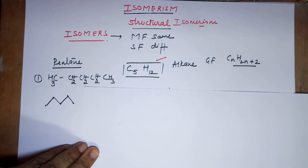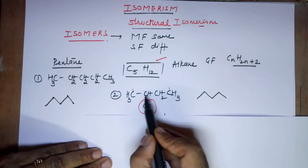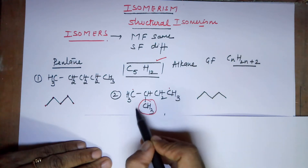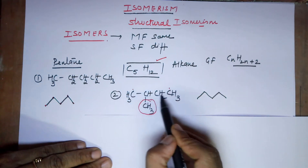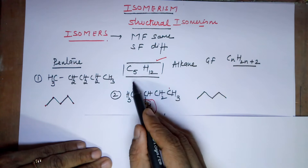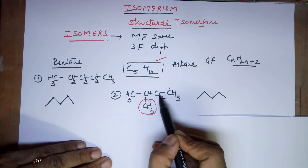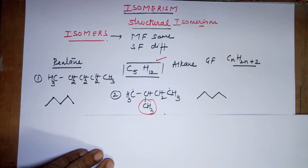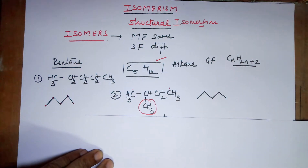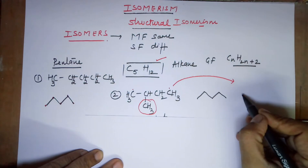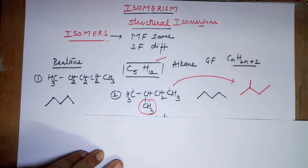Drawing the second formula for the same molecular formula: the structure would have one, two, three, four carbons in a row, where the fifth carbon is a branch. The fifth carbon cannot be put at the ends because it would lead to the same structure as pentane — it is just a continuous chain of five carbons. So you can put the methyl group only on a centrally placed carbon. The bond line formula for this structure has one, two, three, four carbons with a methyl linkage on the second carbon. This is called 2-methylbutane.